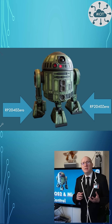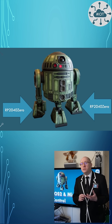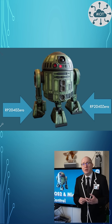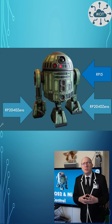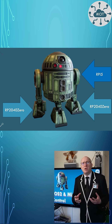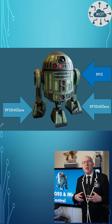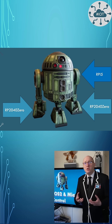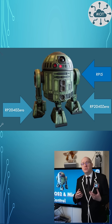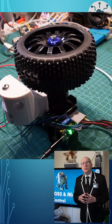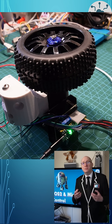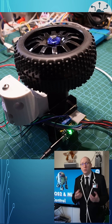The Droid has separate RP2040 boards controlling each wheel and then a central Raspberry Pi 5 as the brain. The Pi 5 will be interpreting the request to move and translating that into instructions for each of the wheels. The RP2040s will then manage the speed control of the wheels.